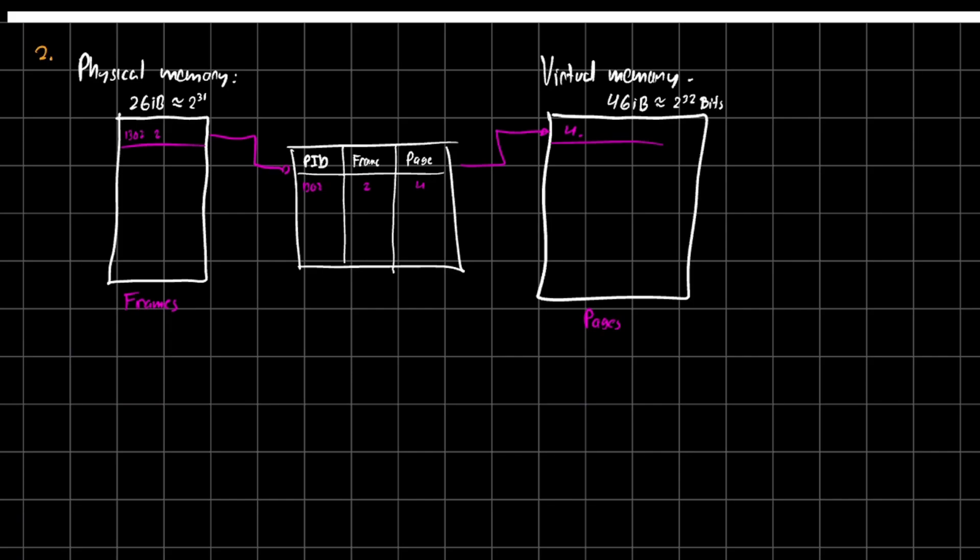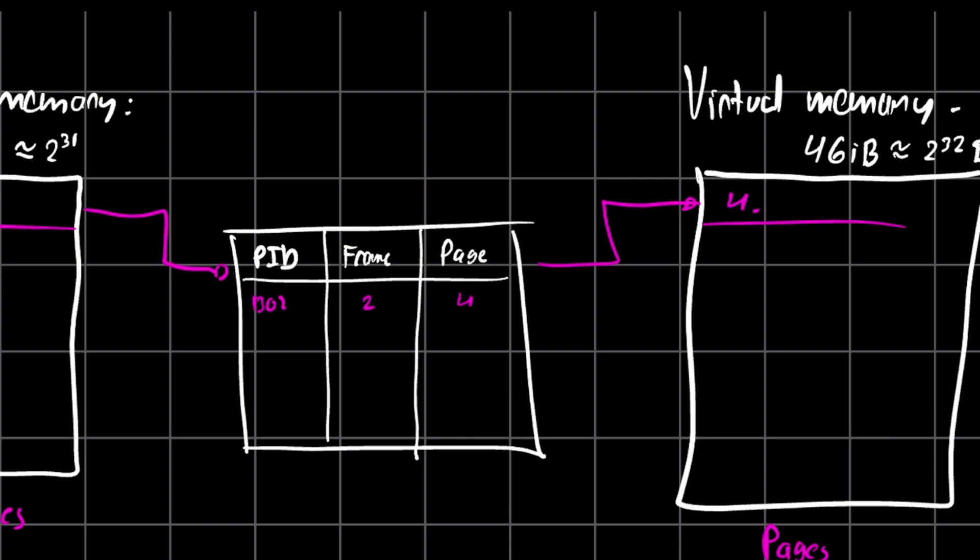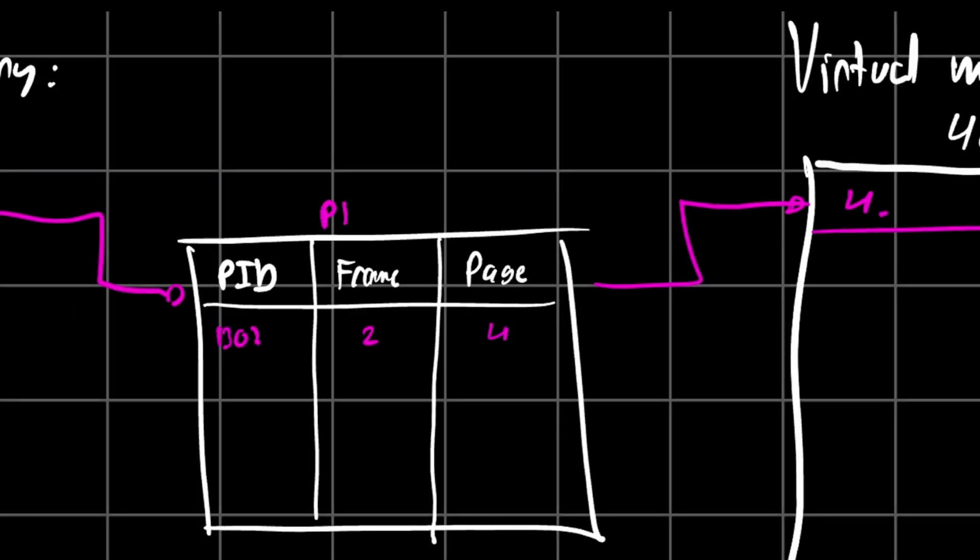Normally speaking, this is also known as a virtual page number and the physical page number. So we can also write this as PPN, physical page number, and VPN, virtual page number. Do not get confused on the VPN as virtual private network. A totally different topic.